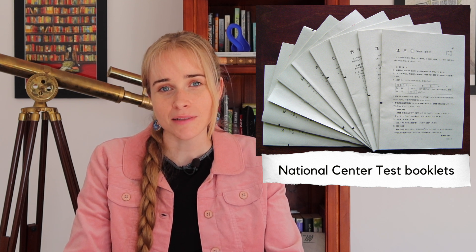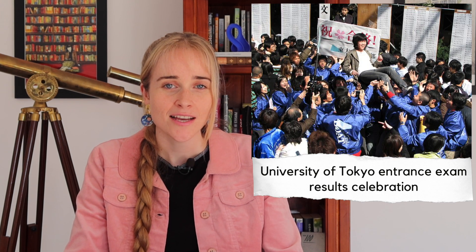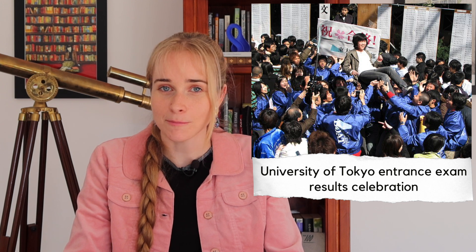In Japan, students applying to public universities will first take the national center test, and with these scores they can then apply to particular universities where they might be invited to take a department specific test. The University of Tokyo is one of Japan's top ranking universities, and this is their 2021 mathematics test.